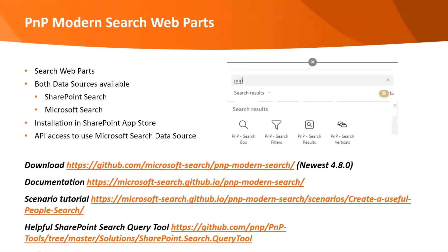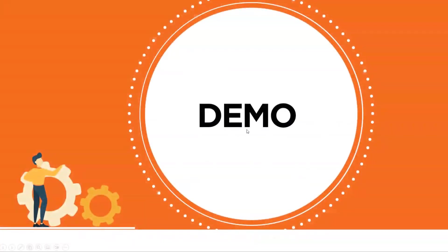In this solution I use the PNP Modern Search web parts, available on GitHub. The newest release is 4.x — a really new release. We have four web parts available: the search box, filters, results, and verticals. In the search results web part both data sources are available — SharePoint search and Microsoft search. You can install this app in the SharePoint app store, and if you want to use Microsoft search you need to approve API access in the SharePoint admin center.